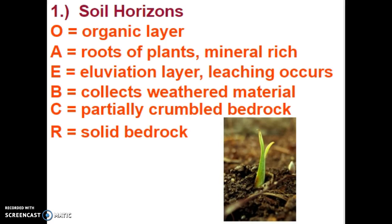The very top layer is the O layer — O stands for organic. This is where a lot of the little critters are crawling in the ground, where plants grow with shallow roots, and where a lot of decaying plant and animal matter will be found. Below the O layer we have the A and the E layer. Sometimes the O and A layers are called the topsoil. In order to grow crops you need topsoil — the organic layer and the A layer, which is very mineral-rich and is why plant roots grow there, taking the minerals out of the soil.